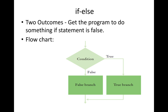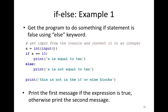With if-else, you get two outcomes. It gets the program to do something if the statement is true, and something else if the statement is false. The flowchart shows a true branch and a false branch. The else keyword handles the false case.